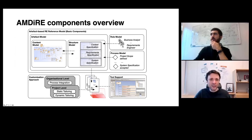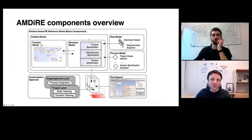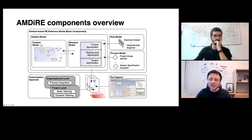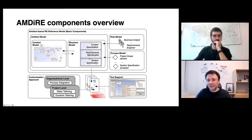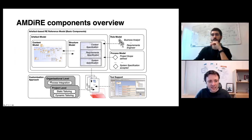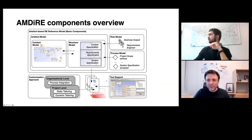MDIA comes with a set of different components. The basic components are all elements necessary for process integration. Following the philosophy of artifact orientation, the artifact model of MDIA is the backbone of the whole approach — with a very detailed content model that dictates how to specify actual contents, and a structure model distinguishing three main artifacts: the context specification, the requirement specification, and the system specification, which is not in scope for our course.